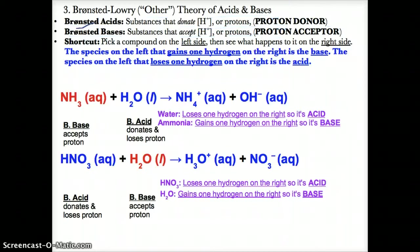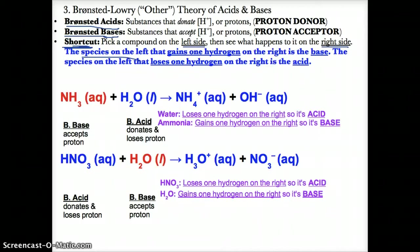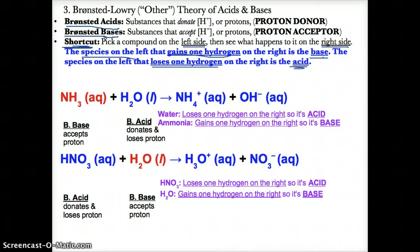Any substance that donates or loses H+ ions in solution is a Bronsted acid, whereas any substance that gains or accepts H+ ions in solution is a Bronsted base. To determine the Bronsted acid and base in a reaction, pick a compound on the left side and see what happens to it on the right side.